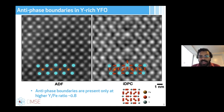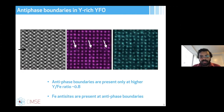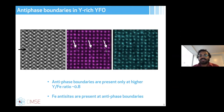IDPC also shows some oxygen contrast, but because the oxygens are very close together it is difficult to resolve them, and we are still working on enhancing resolution. We also found that iron anti-site defects are present at antiphase boundaries rather than yttrium anti-site defects. DFT calculations show these have positive formation energy — meaning they shouldn't form — yet they do form at antiphase boundaries, requiring further investigation.